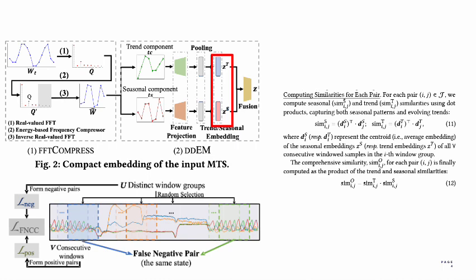In this study, we introduce E2USD to address the above challenges. First, E2USD employs FFT-Compress for efficient frequency component selection, and DDAM for decomposing MTS into trend and seasonal components.